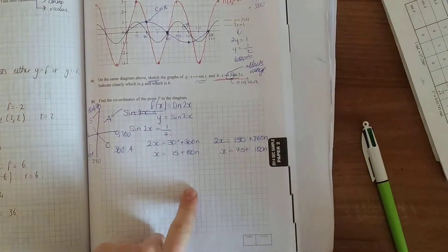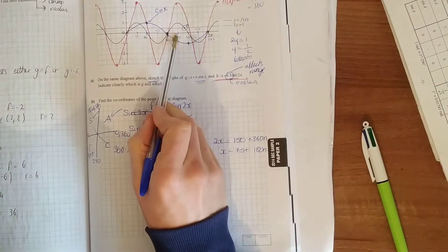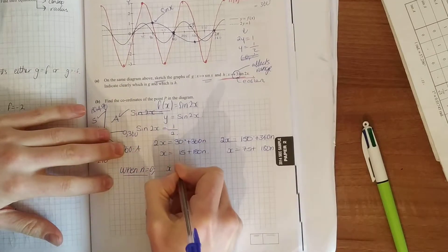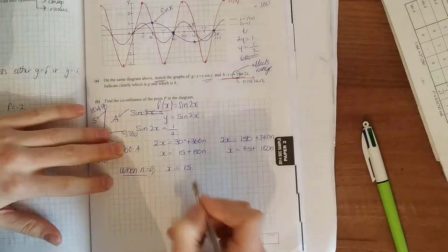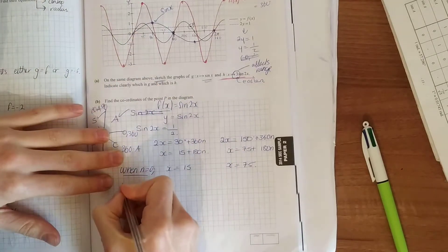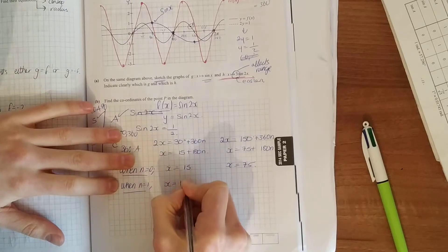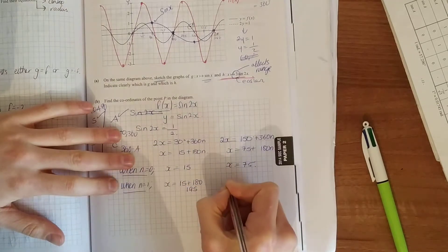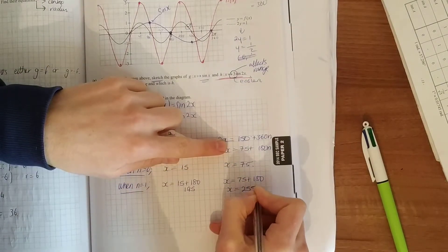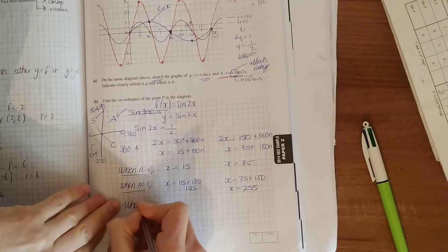We've got to plug in numbers for n until we get something between 225 and 270 degrees. When n equals 0, x equals 15 plus 0, which is 15, and x equals 75. No good, it's back here. When n equals 1, x equals 15 plus 180, which is 195, and x equals 75 plus 180, which is 255. That actually looks good, the 255. I'll check again. When n equals 2...